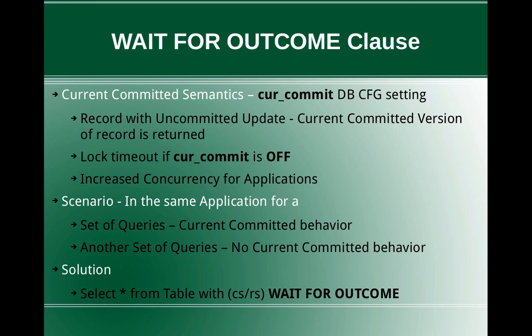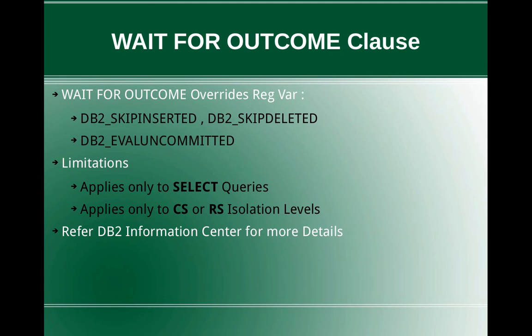If you are using the query without the WAIT FOR OUTCOME clause, then the current committed behavior will be applied if that setting is on. If you are querying SELECT * FROM table WITH WAIT FOR OUTCOME, then the current committed behavior will not be applicable for that particular query, even if it is set at the database level. Another important thing: the WAIT FOR OUTCOME clause even overwrites the following registry variables — DB2_SKIP_INSERTED, DB2_SKIP_DELETED, DB2_EVALUNCOMMITTED. These registry variables can be set on or off at the instance level, and even that functionality can be overwritten by means of the WAIT FOR OUTCOME clause. There are limitations: it applies only to select queries and only to CS or RS isolation levels. Always refer to the DB2 Information Center for more detailed information.